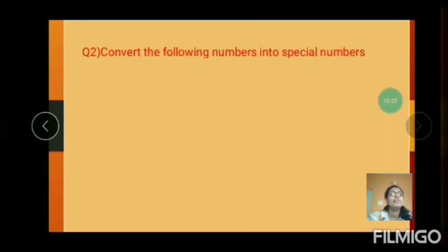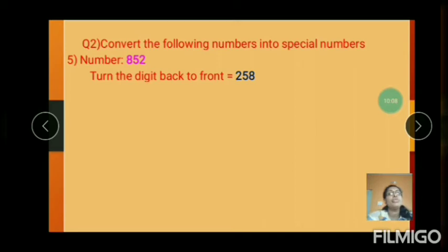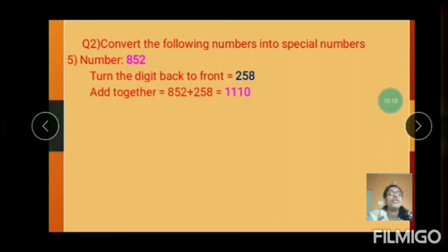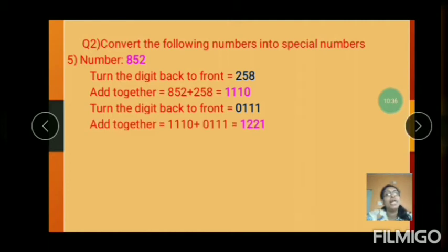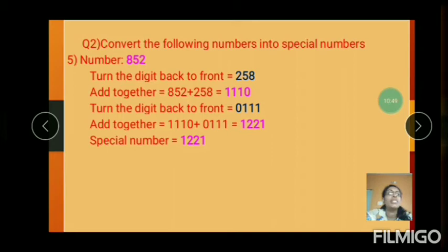The special number is 13431. And question number 5: 852. Turn the digit back to front: 258. Add together: 852 plus 258 equals 1110. Turn the digit back to front again: 0111 is 111. Add together: 1110 plus 111 equals 1221. The special number is 1221.